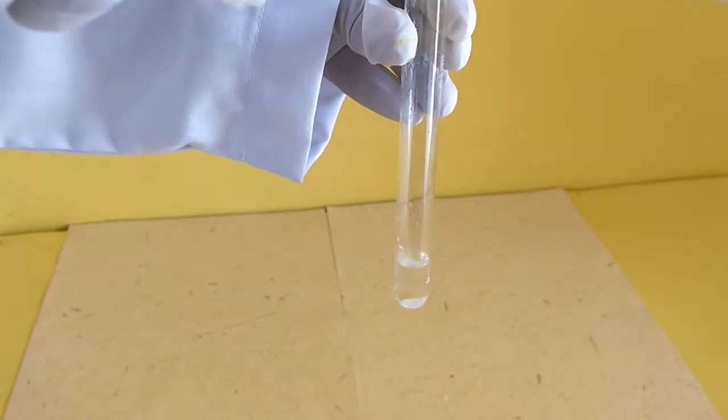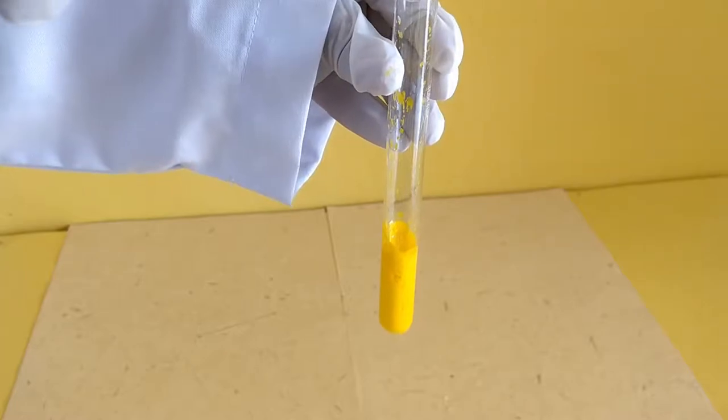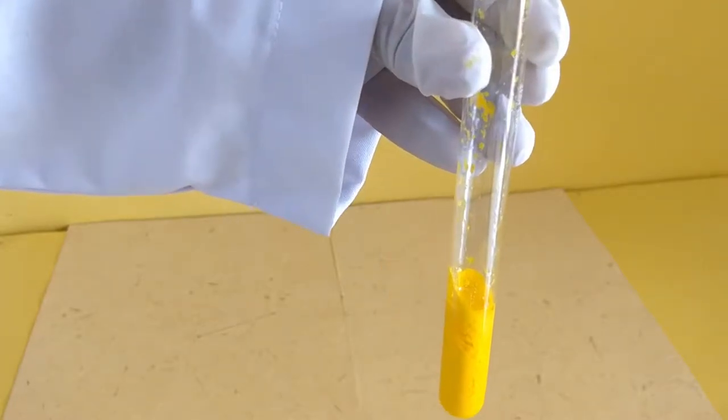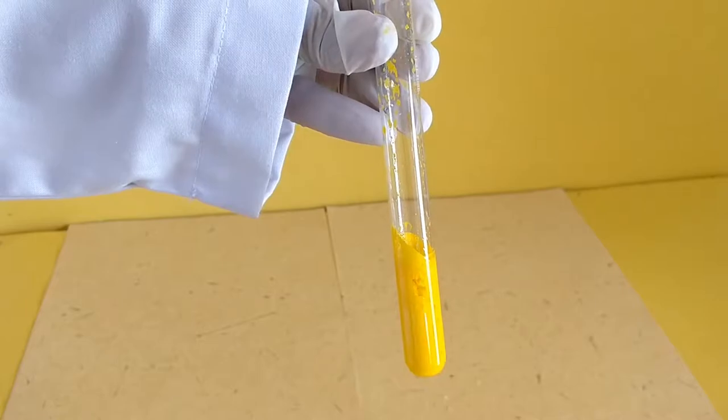You will observe a yellow-coloured precipitate is immediately formed in the test tube. This is lead iodide.